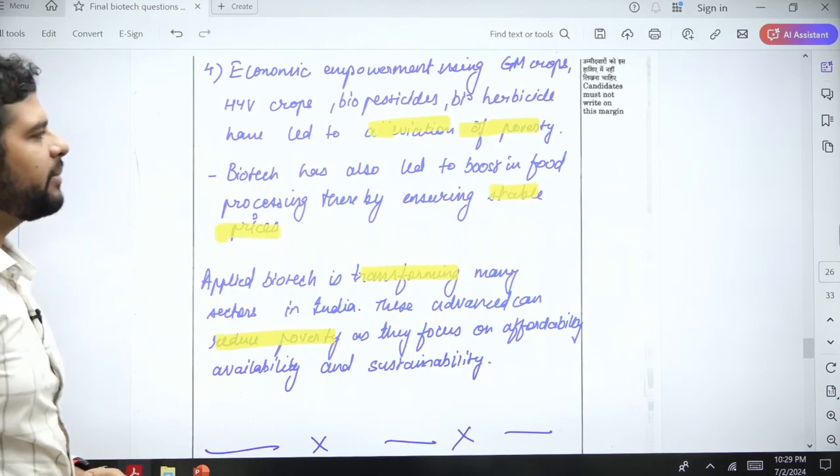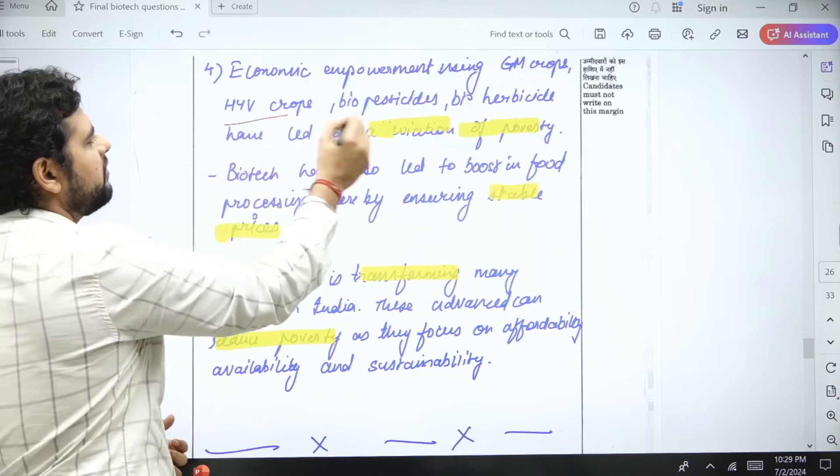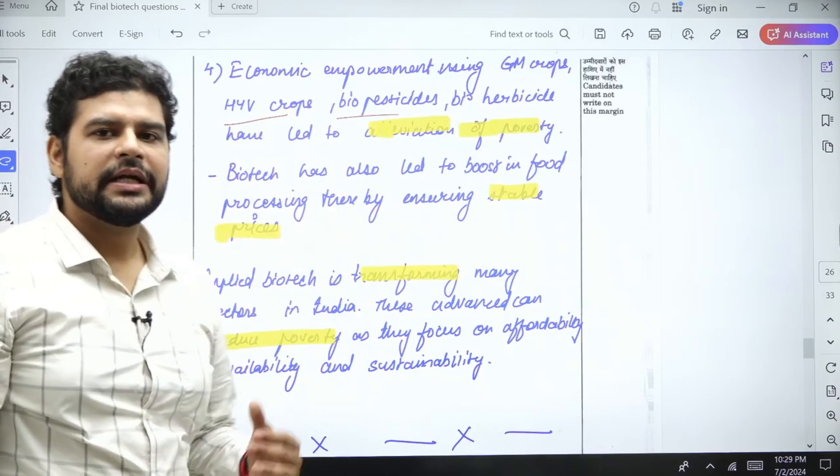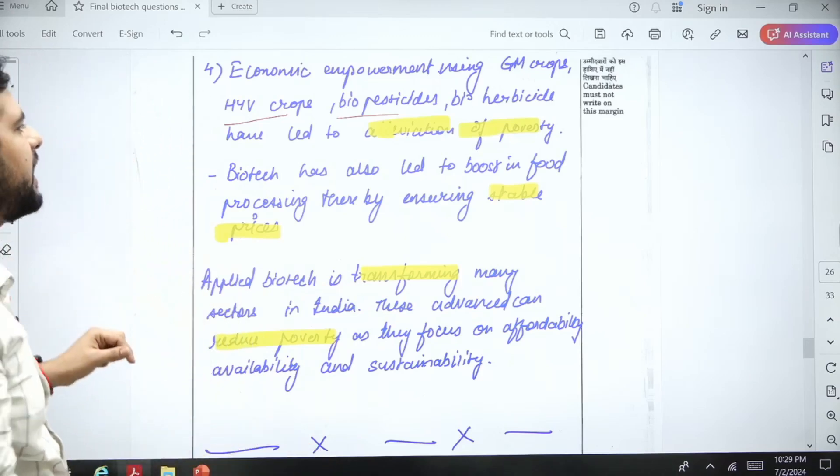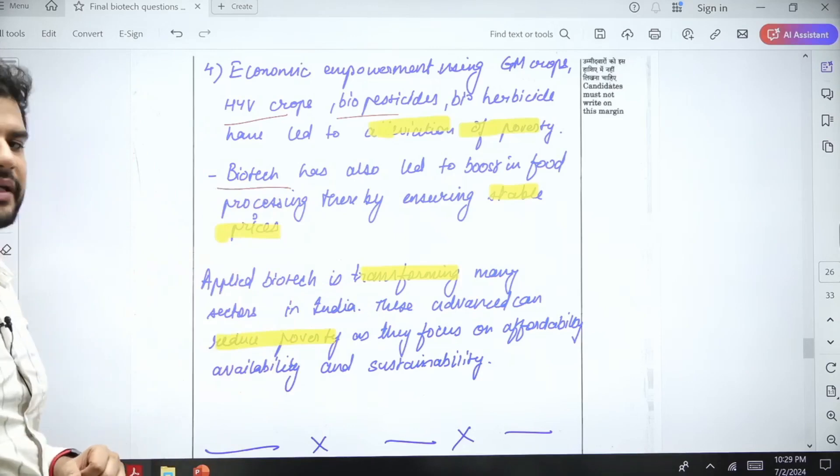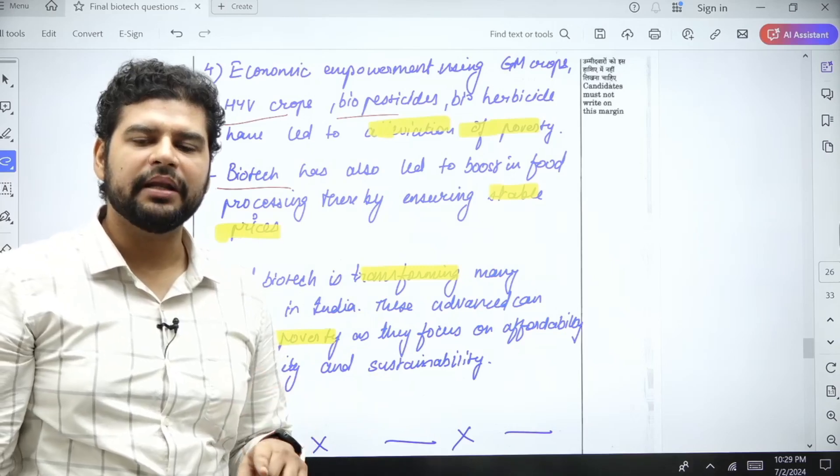What else? Economic empowerment is there through GM crops, HYV crops, bio-pesticides, bio-herbicides. Why? Because they are not costly. They will reduce the input cost and hence they will help in alleviation of poverty. Biotech is also used in the food processing industry, and because of this we have a benefit of stable prices.